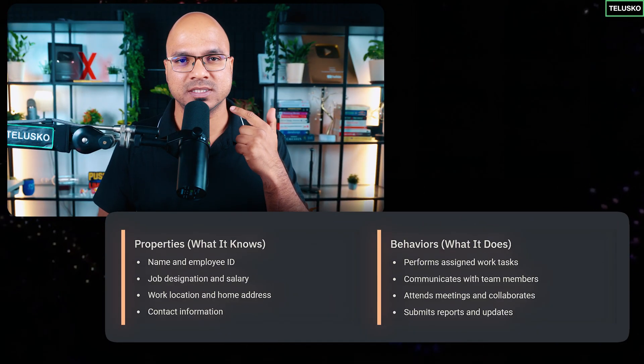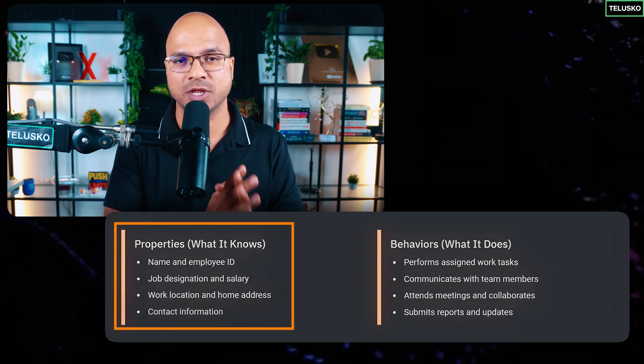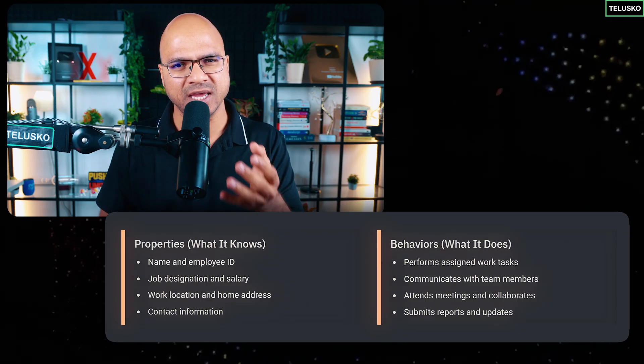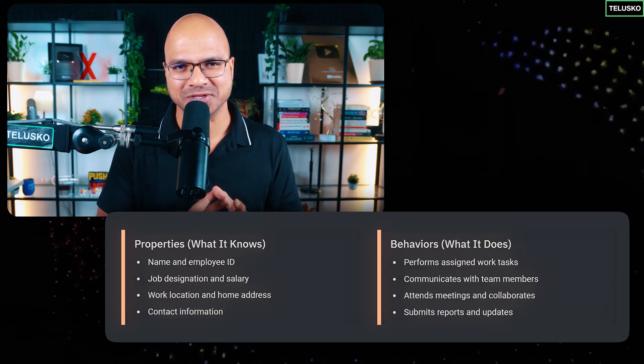In object-oriented programming, whenever you want to represent something, that representation is done with the help of an object. For example, if I want to represent users, employees, a human, or physical things like a camera or gadgets — these can be represented with objects. An employee will have a name, designation, salary, and location. Those are properties. An employee also has behavior — they work, chit-chat, have tea.